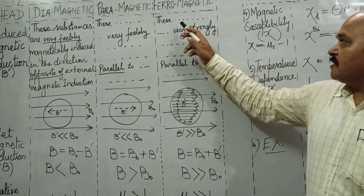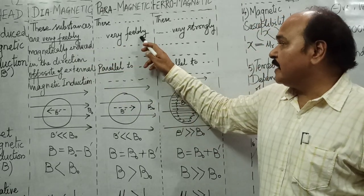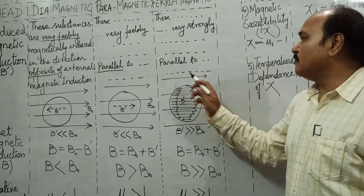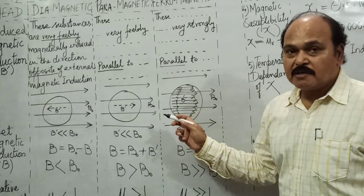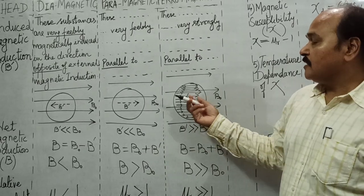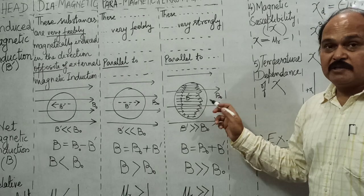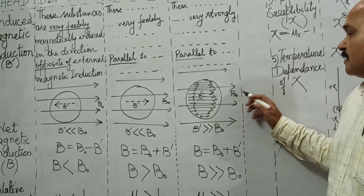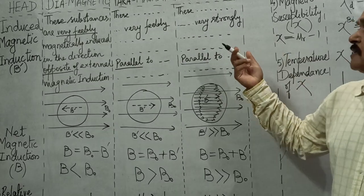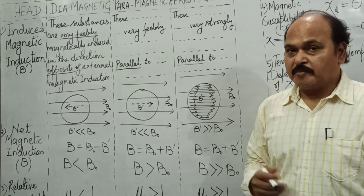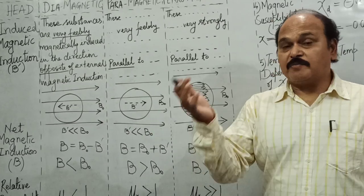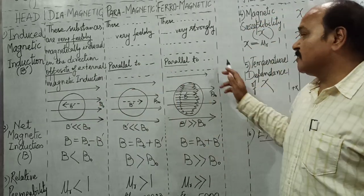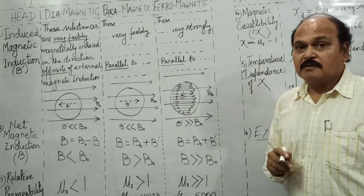Ferromagnetic substances are very strongly magnetically induced in the direction parallel to the external field — unlike diamagnetic and paramagnetic which are very feebly induced. Paramagnetic and ferromagnetic substances show unnatural behavior: normally the induced field is produced in the opposite direction, which is the natural behavior seen in diamagnetic substances. But for paramagnetic and ferromagnetic substances, the induced field is in the same direction as the external field.